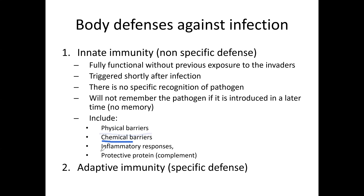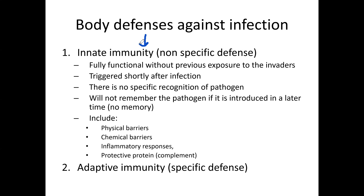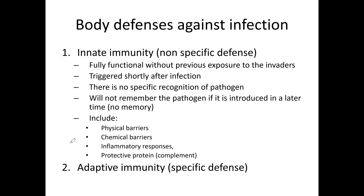Innate immunity includes physical barriers, chemical barriers, inflammatory response, and protective proteins called complement. To summarize: innate immunity is non-specific defense you are born with — your skin, chemical barriers in your skin and mucous membranes, inflammatory response, and complement. It triggers shortly after infection and leaves no memory of the infection.